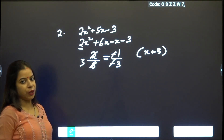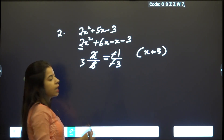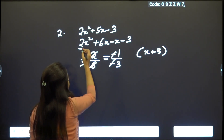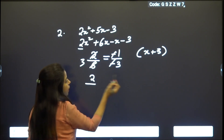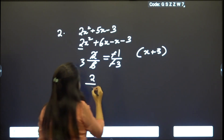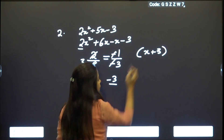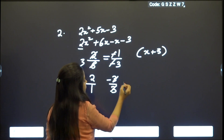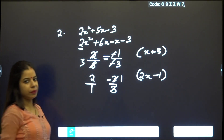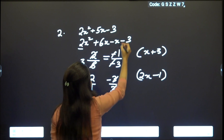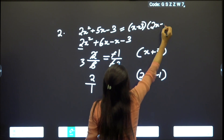For the second factor we apply the sutra Adyam Adyena, first by first and last by last. We divide the first term (2) by the first term of the factor (1), and the last term (−3) by the second term of the factor (3). This gives 2 and −1, so the second factor is 2x − 1. Therefore the factorization of 2x² + 5x − 3 is (x + 3)(2x − 1).